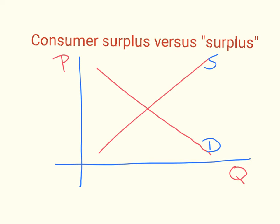Just a quick note about what consumer surplus is versus the regular surplus we talked about before. Consumer surplus is what we just discussed — the area underneath the triangle between the demand curve and the equilibrium price. The terms are confusing; if I were to make up these terms I would have chosen different ones, but this is what they are.